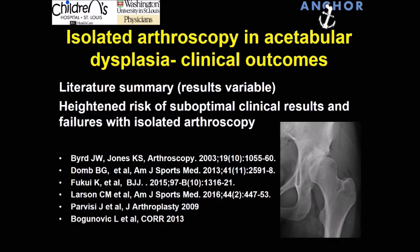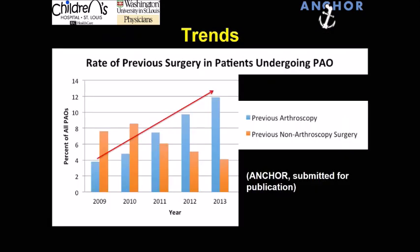If you look at the literature, the results are variable. A fair conclusion is that there's a heightened risk of suboptimal clinical results and clinical failures when hip dysplasia is treated with isolated hip arthroscopy. These are the trends of patients treated by the ANCHOR study group — patients treated with periacetabular osteotomy over time. In the light blue, you can see the percentage of patients over time that have a failed hip arthroscopy prior to their PAO. We're seeing more and more patients that have had a failed arthroscopy and need to go on to the PAO. So a natural question is: what is the impact of that failed arthroscopy on the outcome of the salvage periacetabular osteotomy?